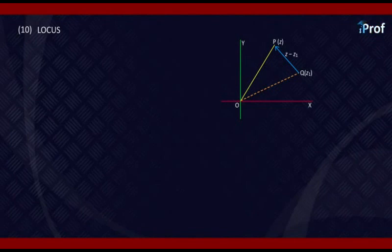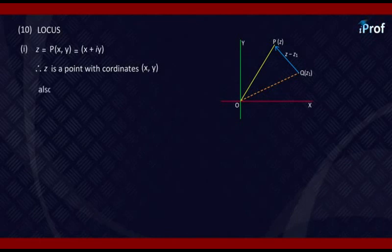Next, we try to find out the locus of a certain position P(x,y) in the Argand diagram. We say z is the point P with coordinates (x,y), which represents the complex number x + iota y. Also, z is a point with coordinates (x,y).